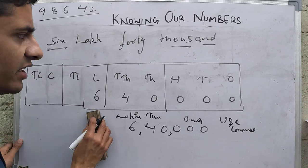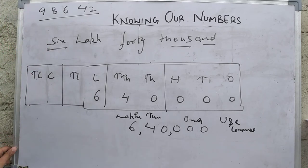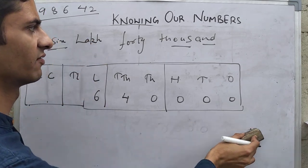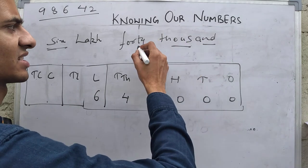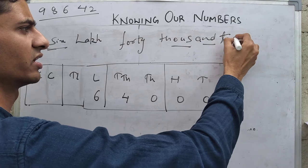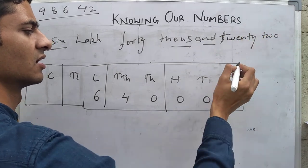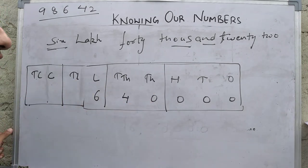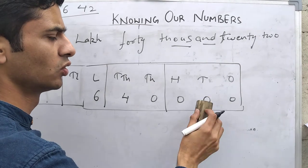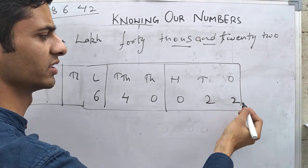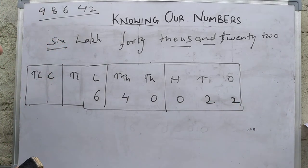From a number name you can write the number, and from a number you can write the number name — both have been covered. Let us extend the example a little: 6 lakh 40,000 and 22. For 6 lakh I have written the value, for 40,000 I have written the value, now I have to write 22. I am not having any hundreds — 22 means two tens and two ones. The remaining places stay zero. This is how you write numbers from number names.